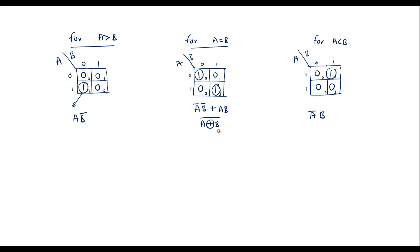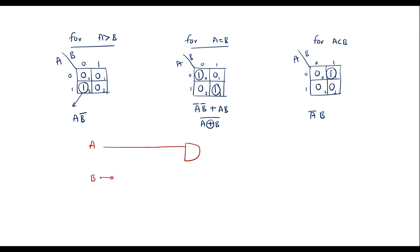With the help of these Boolean equations we can now draw the circuit. For a·b̄ (a greater than b), let me take one AND gate with a as one input. The b line passes through a NOT gate to produce b̄, which is connected to the second input of the AND gate. The output of this AND gate is a·b̄, which represents a greater than b.